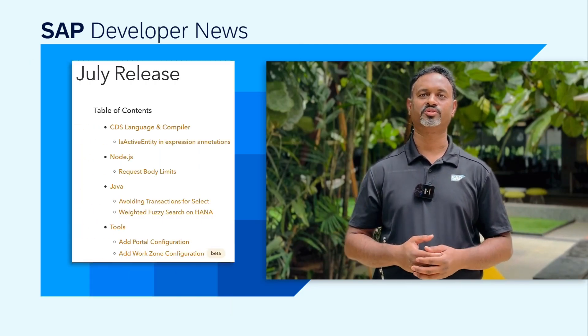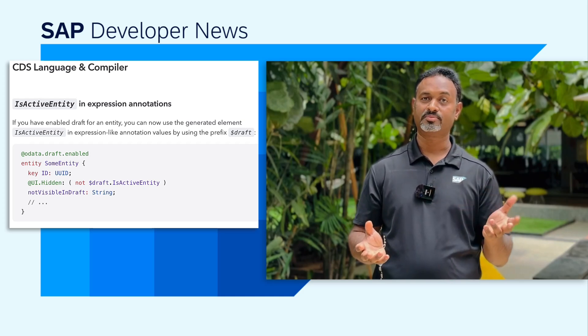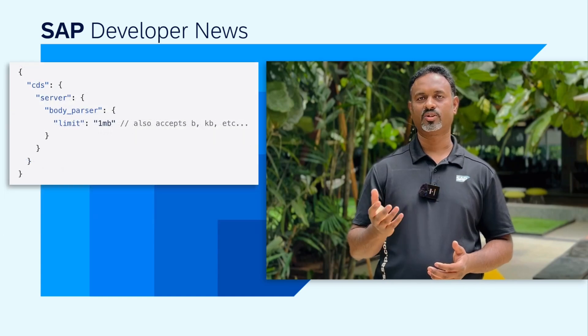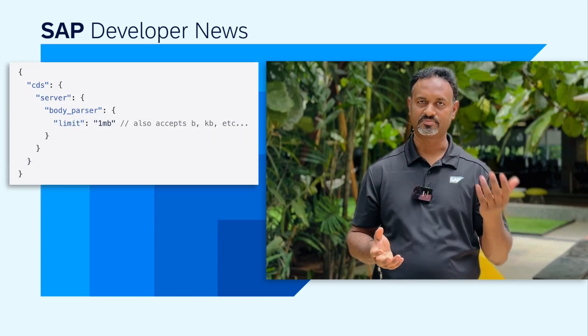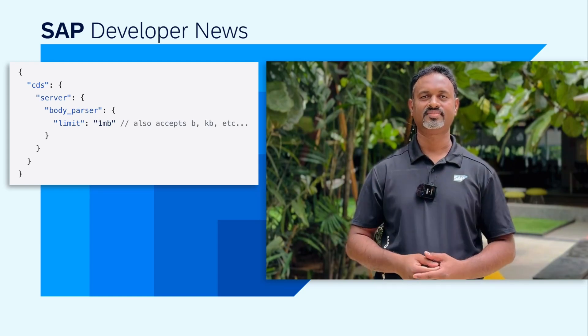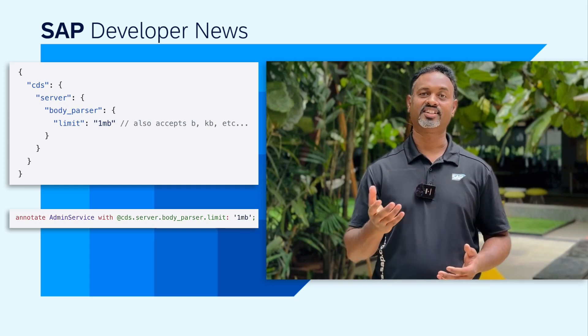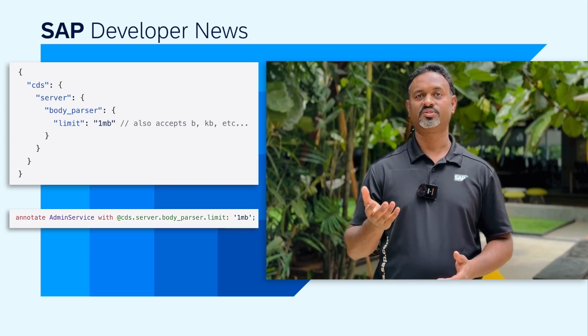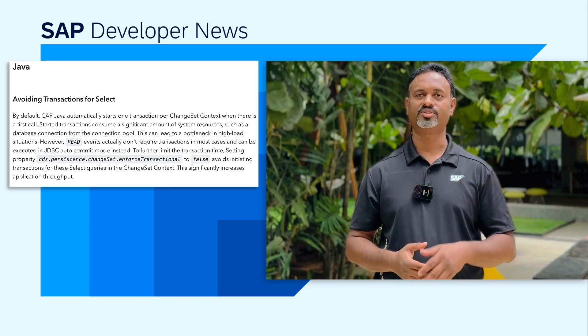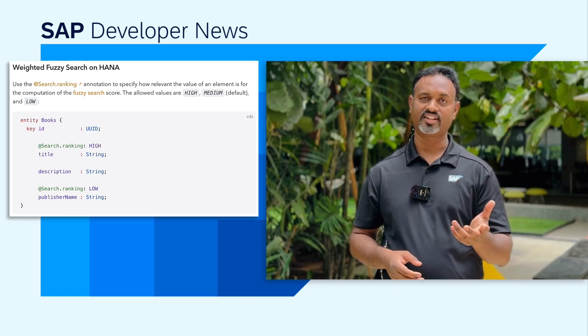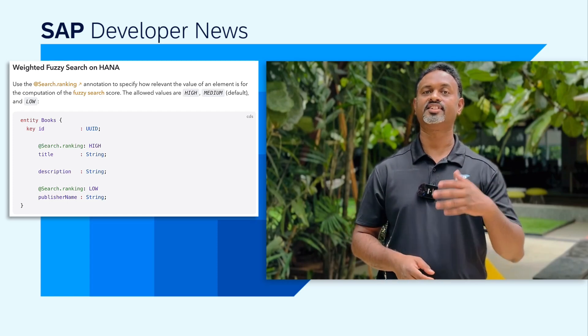Hello developers. We saw a major release for Cloud Application Programming Model in June. As of July 2024, the CAP release is now available. In CDS language updates, the ISActive entity in the context of draft-enabled entities can now be used in expression annotations. New updates on Node.js include a global configuration, cds.server.body-parse.limit, which allows restrictions on the accepted request body size for all endpoints of the server. In addition, there is a server-specific annotation at-the-rate cds.server.body-parse.limit that can be used to specify different payload sizes for different services within the application. Java updates include the provision for avoiding transactions on select queries, and the at-the-rate search.ranking annotation now enables specifying the relevance or weight for entity elements, enabling weighted fuzzy search on HANA.